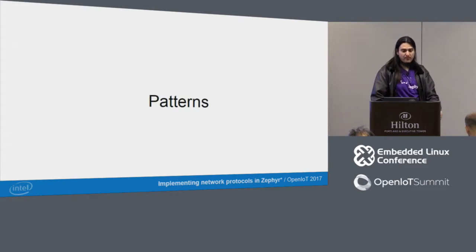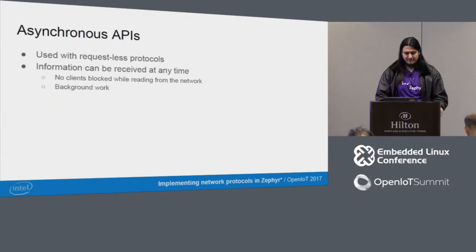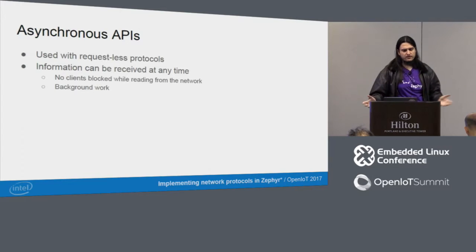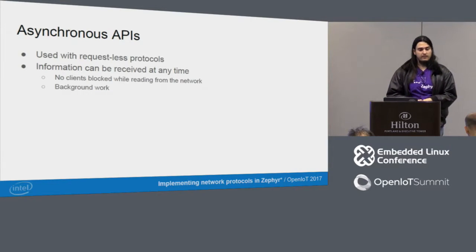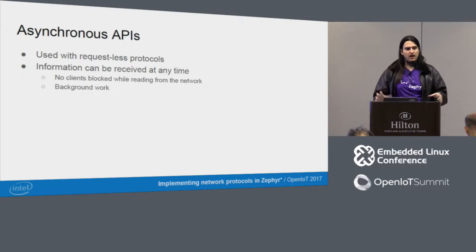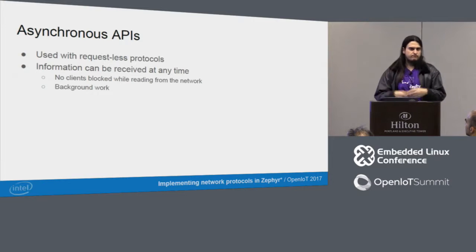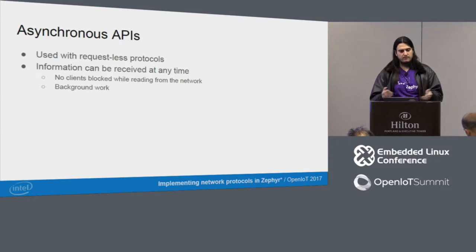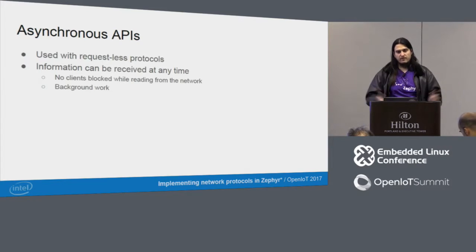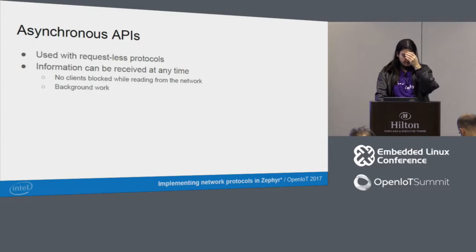Some of the patterns these protocols have regarding their implementation: asynchronous APIs. We often use these with request-less protocols, where information can be received at any time. Clients are not blocked while reading from the network — some background work is being done for you, and whenever you need to receive something, you will be notified via callback functions.